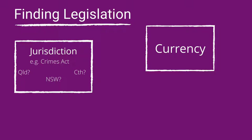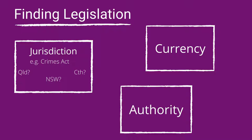Perhaps you need to refer to an older version of an Act rather than the most recent version — for example, what was the Act at the time the crime was committed? Three, the authority of the Act. Is the version you are looking at the authorised version? Each Australian state and territory has a specific website for their legislation, but some, not all, are authorised websites.